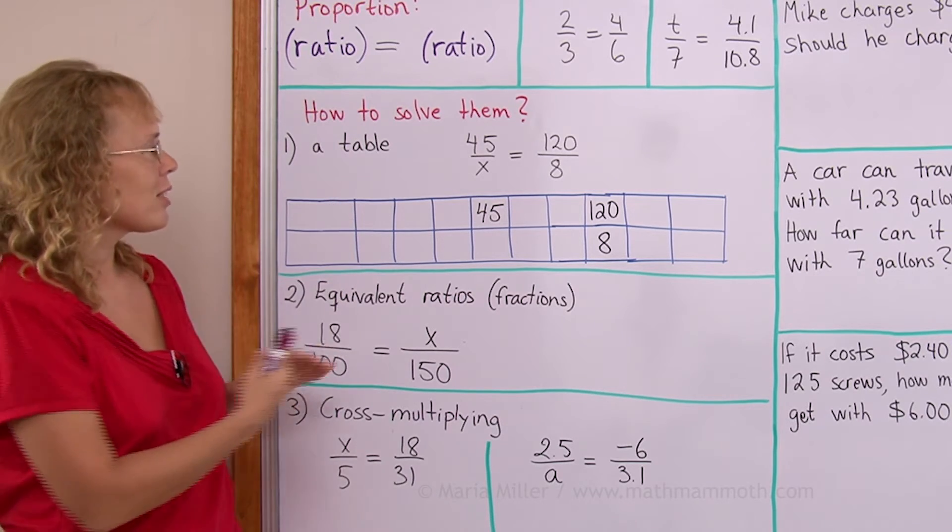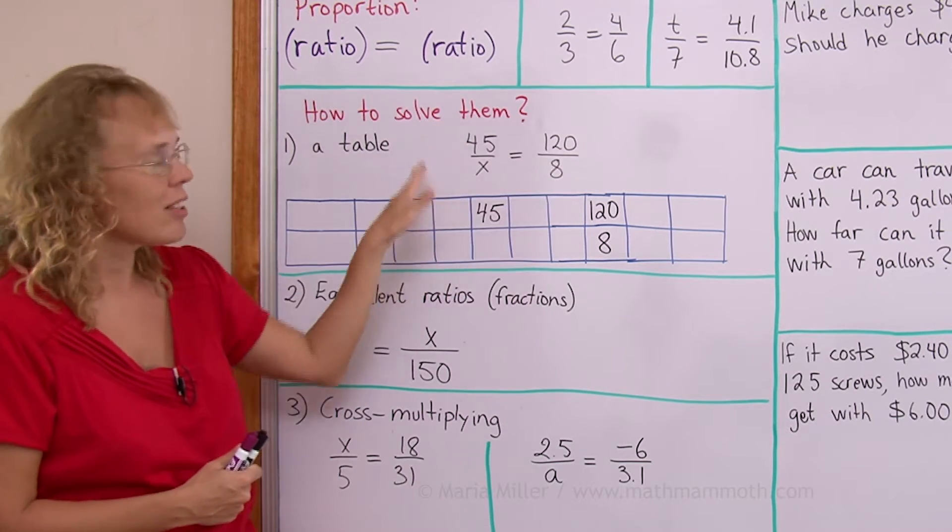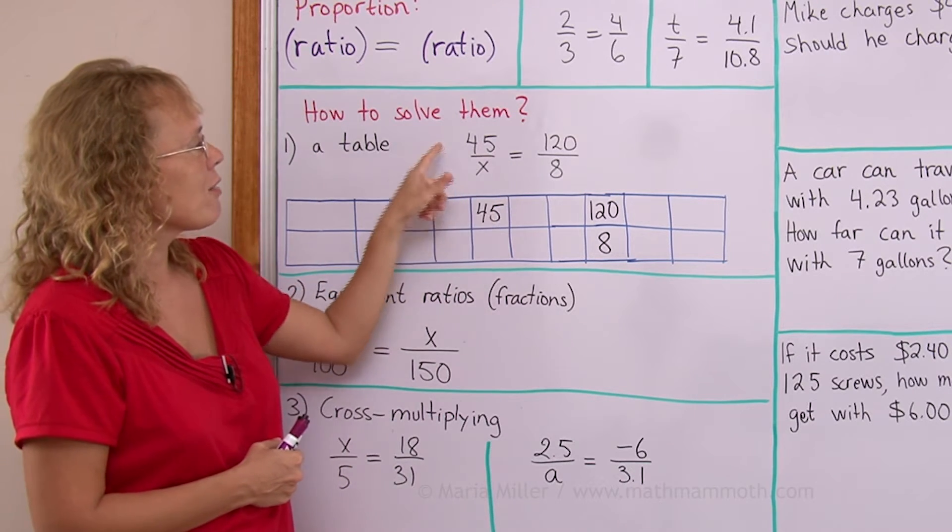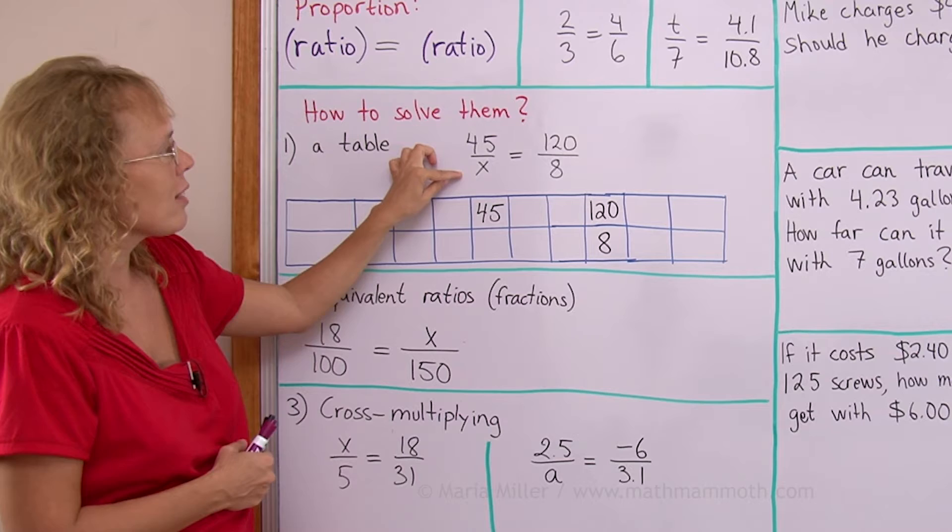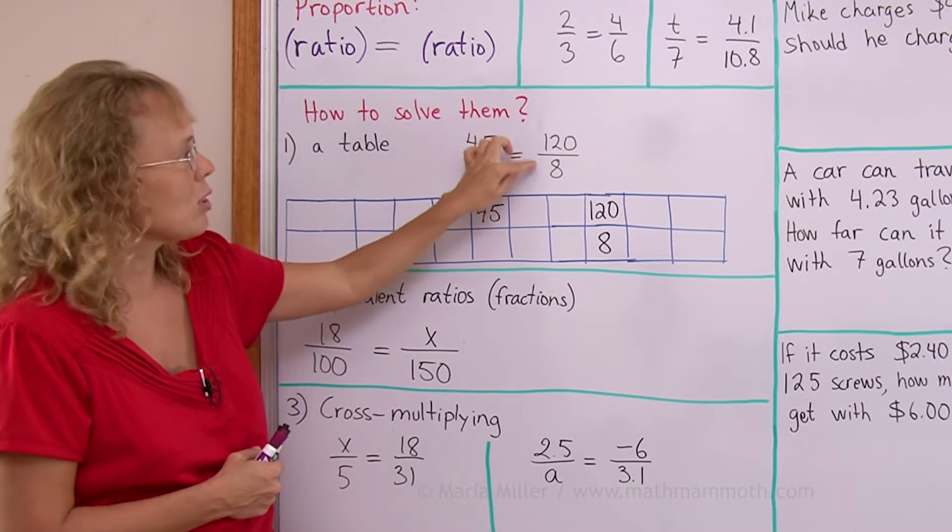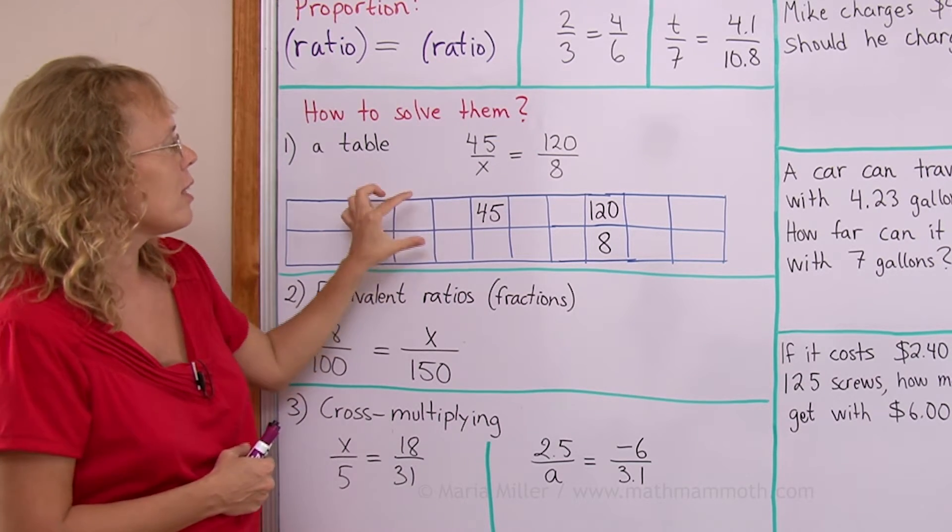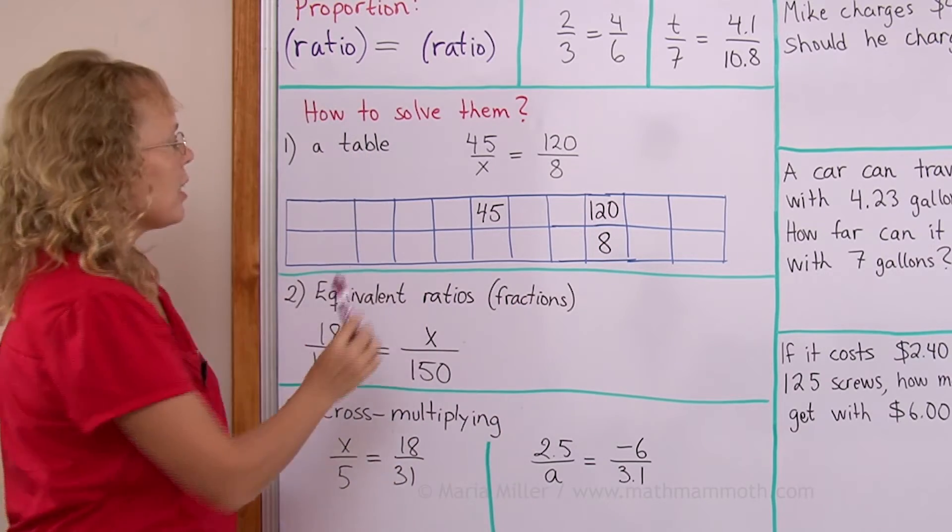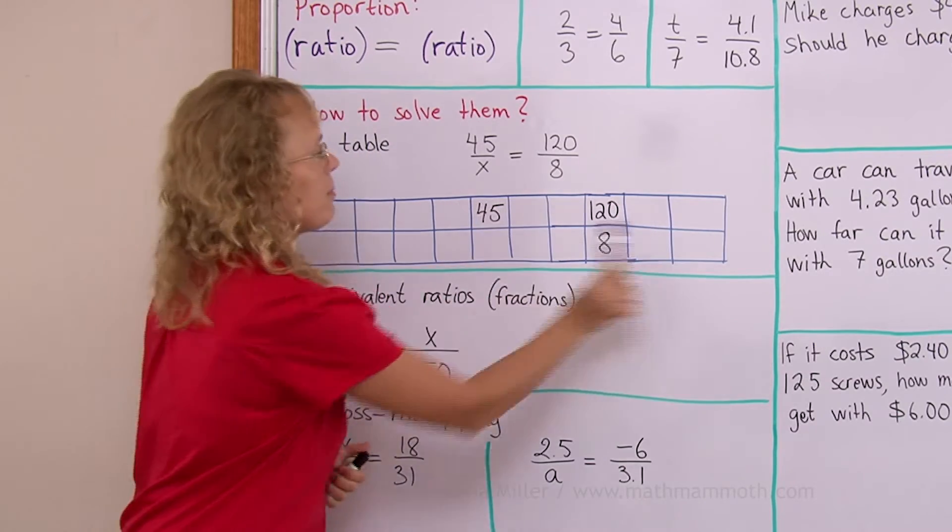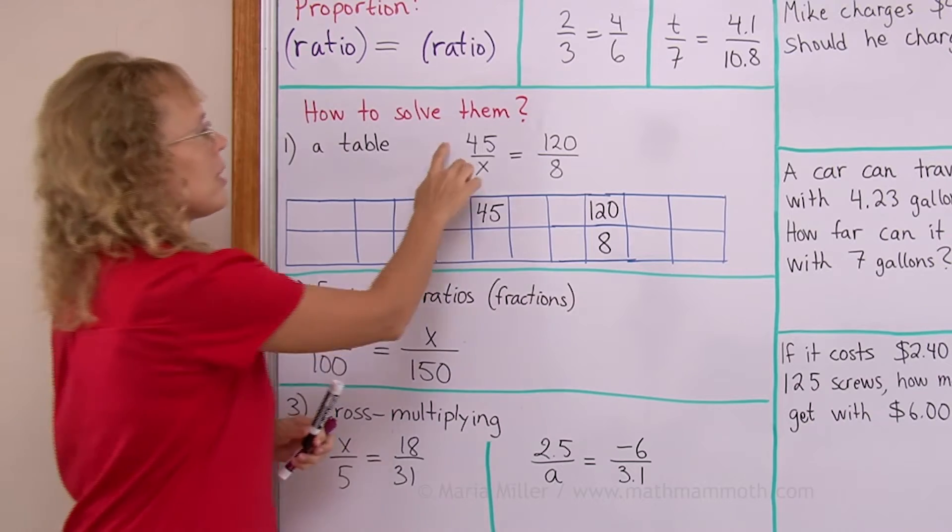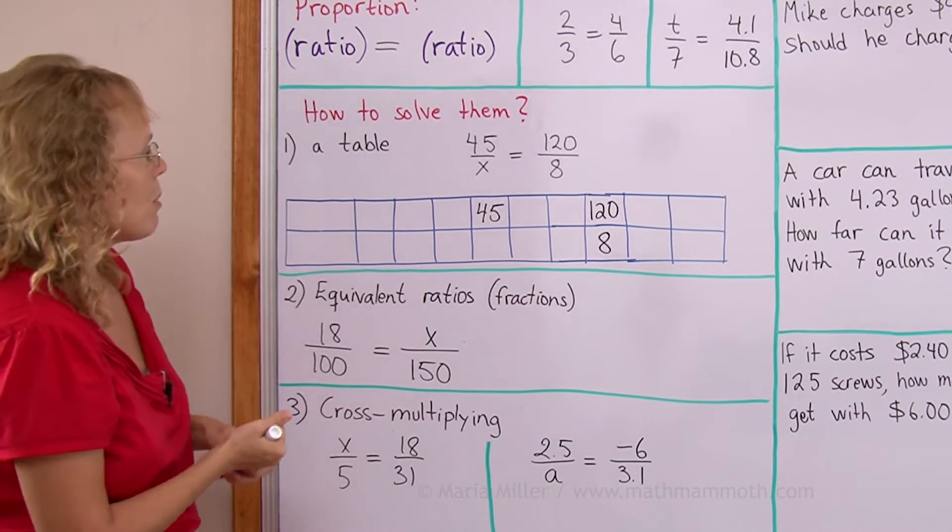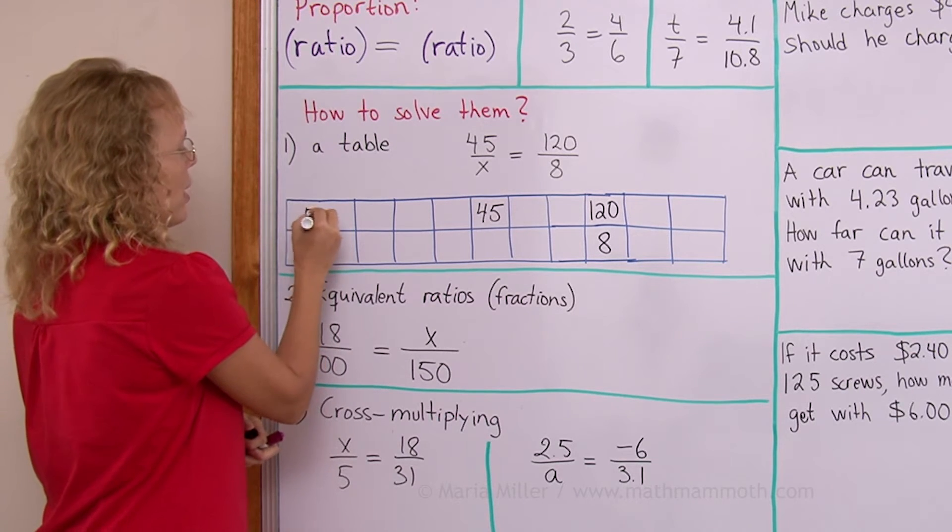One would be that we can make a table. For example, let's say I am given this proportion to solve, and I can think of these two ratios, 45 to x and then 120 to 8, as being here in this table. 120 to 8 here, and I'm thinking of two quantities here. For example, maybe these top numbers, the 45 and 120, maybe they are dollar amounts, such as a person's pay or something.